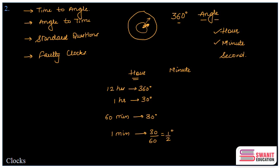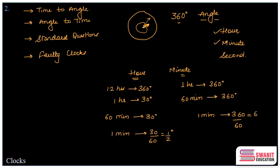Similarly, let's calculate for the minute hand. To complete one full circle, the minute hand requires one hour — that is, in 60 minutes it covers 360 degrees. We should remember these values because in exams we won't spend time recalculating. Therefore, in one minute, the minute hand covers 360 divided by 60, which equals 6 degrees per minute. So the hour hand travels 0.5°/min and the minute hand travels 6°/min.